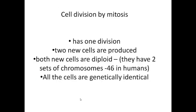To sum up cell division by mitosis: there was just one division, two new cells were produced, both those new cells were diploid — they have two sets of chromosomes, 46 in humans — and all the cells were genetically identical. They need to be genetically identical because you're wanting to replace old cells or grow new cells, and you want your body to grow in the same way.